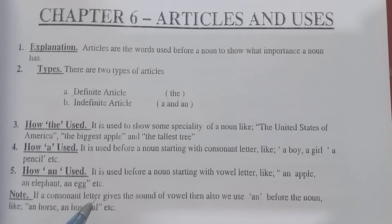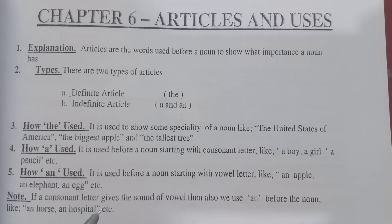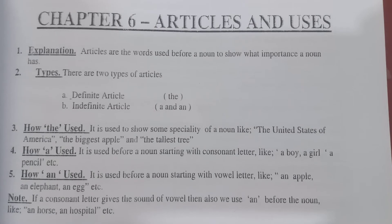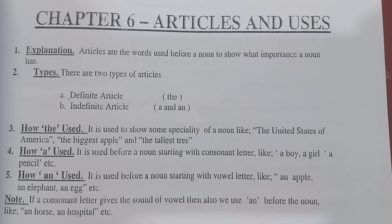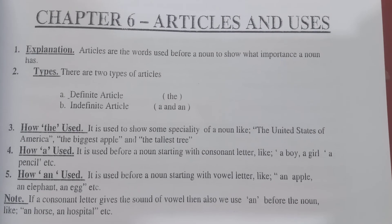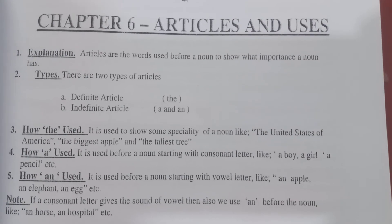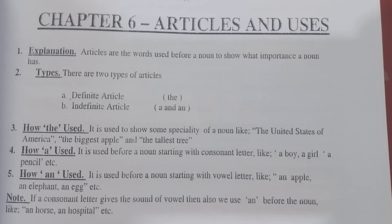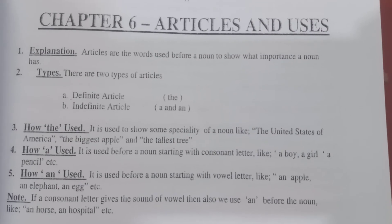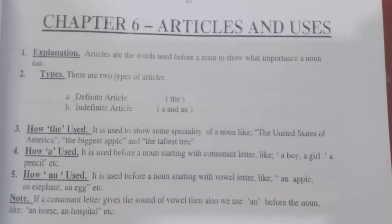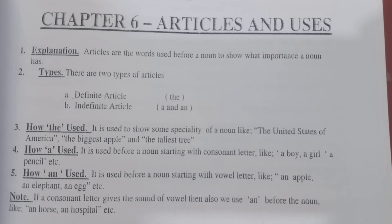Note: if a consonant letter gives the sound of a vowel, then we also use 'an' before the noun. For example: 'Ali is an honest boy.' 'Honest' is spelled H-O-N-E-S-T. The 'H' is giving the sound of a vowel 'A,' so we use 'an honest boy.' So: 'an' is used with vowel words, 'a' is used with consonant words, and 'the' is used for specific words.